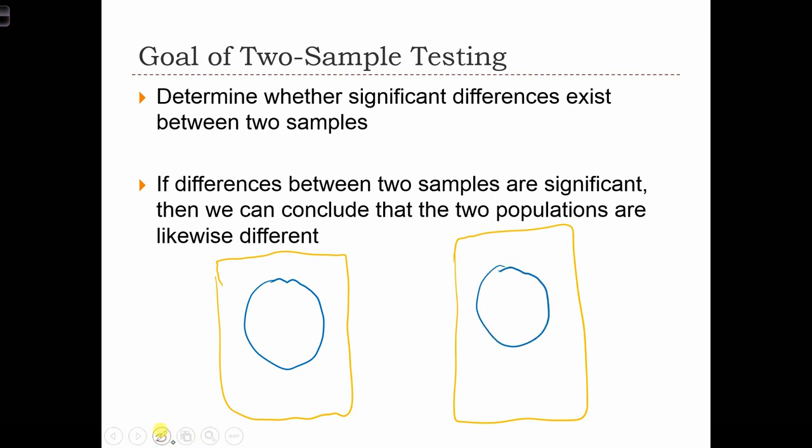For each of those two samples, we're going to calculate the sample statistics: X̄₁ and S₁ for Sample 1, and X̄₂ and S₂ for Sample 2. What we're going to do is conduct a test that looks at the similarities or differences between X̄₁ and X̄₂.